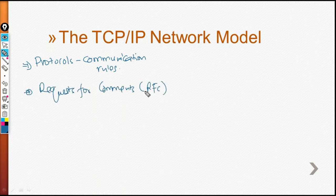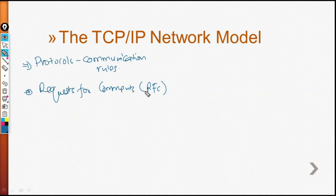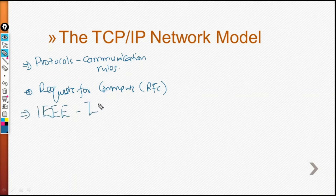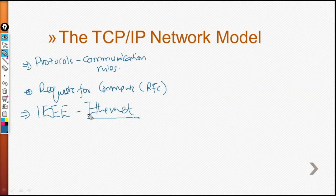The TCP/IP model also avoids repeating work that has already been done by other standards bodies or vendors. Instead of redoing that work, the TCP/IP model simply refers to standards or protocols created by others to avoid repetition and confusion. A good example is that the IEEE defines Ethernet, and TCP/IP keeps referring to this Ethernet standard as opposed to coming up with its own.